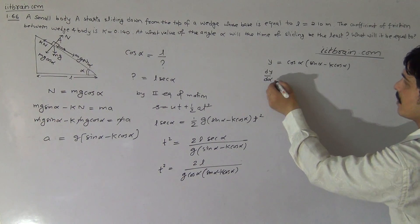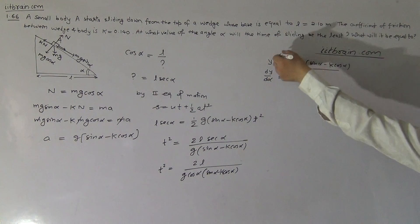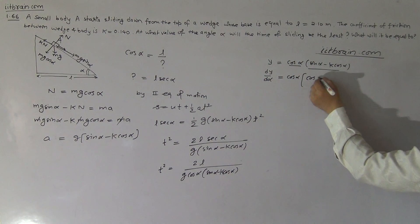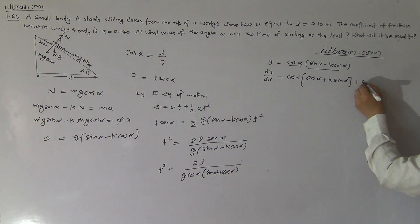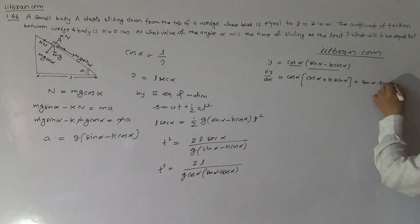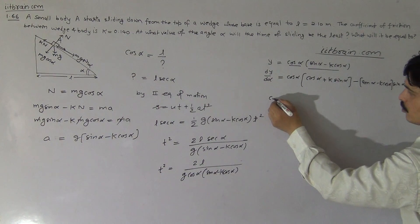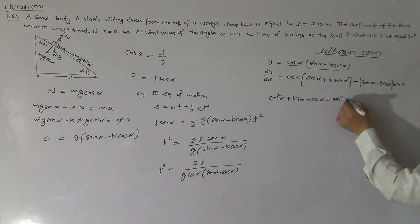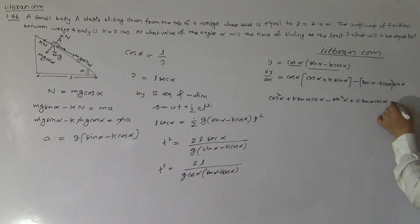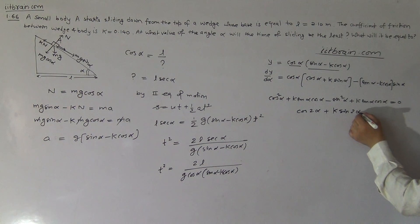Differentiate y equals cos alpha times (sin alpha minus K cos alpha) with respect to alpha. By the product rule: dy/d alpha equals cos alpha times (cos alpha plus K sin alpha) plus (sin alpha minus K cos alpha) times (minus sin alpha). Comparing to zero gives: cos squared alpha plus K sin alpha cos alpha minus sin squared alpha plus K sin alpha cos alpha equals zero, which simplifies to cos 2alpha plus K sin 2alpha equals zero.